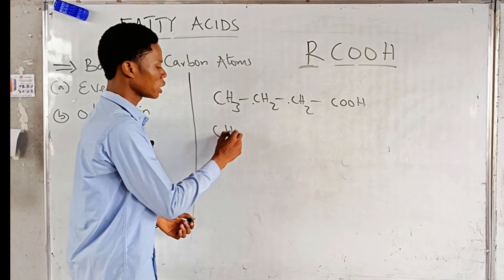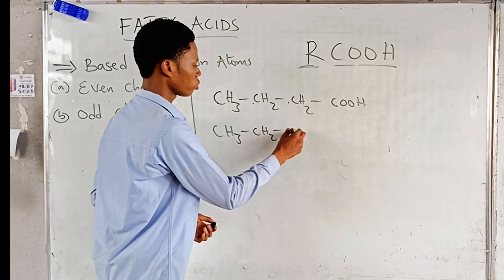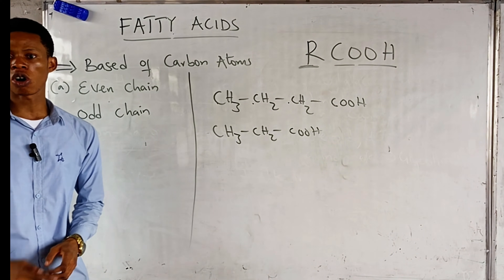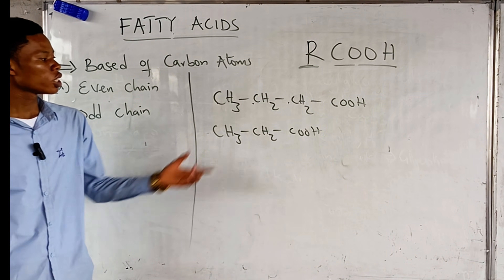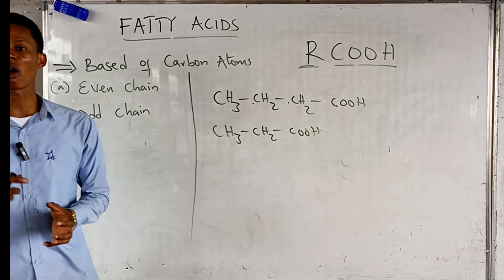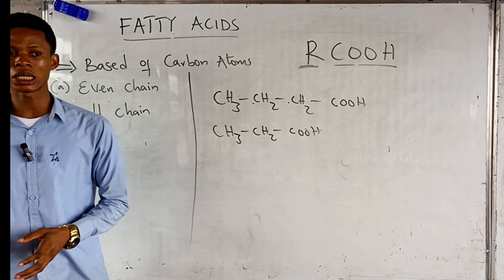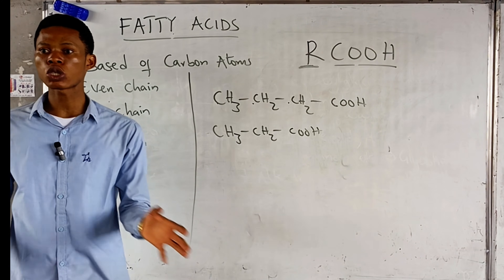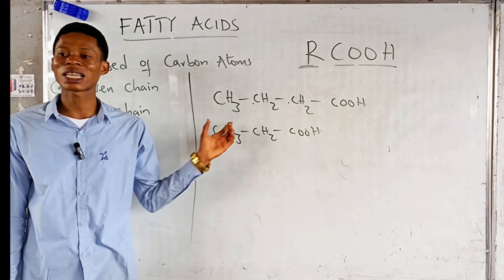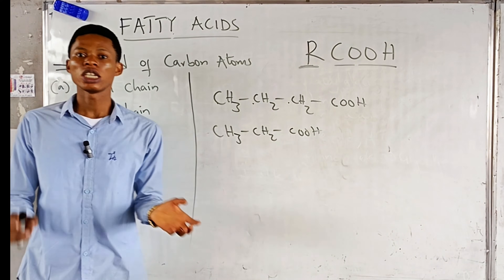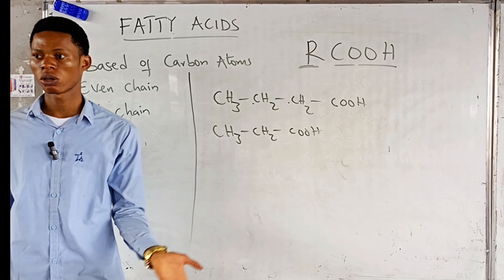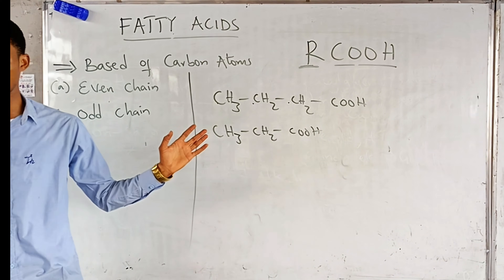If the number of carbons present is three, for example, that is an odd number, so it is an odd-chain fatty acid. Based on the total number of carbons present, we classify fatty acids into even-chain or odd-chain. All you have to do is count the number of carbons: if it is even, it's an even-chain fatty acid; if it is odd, it's an odd-chain fatty acid.